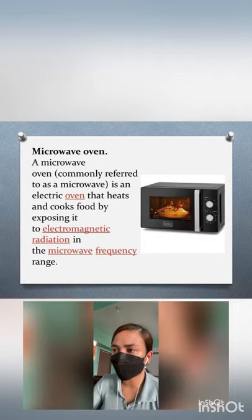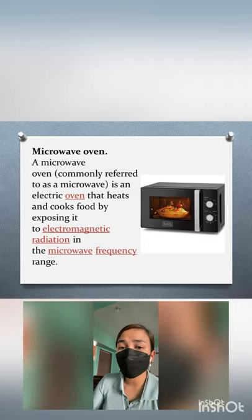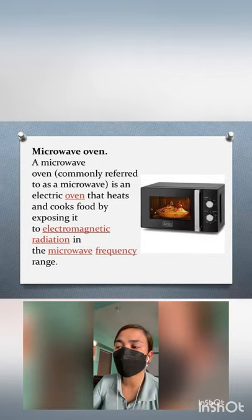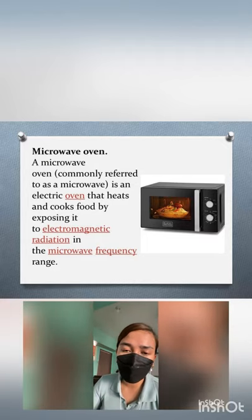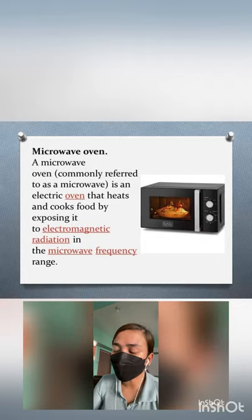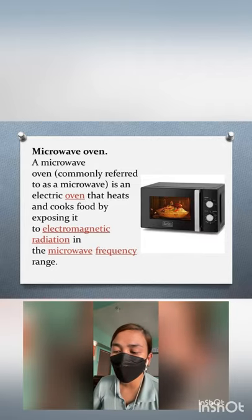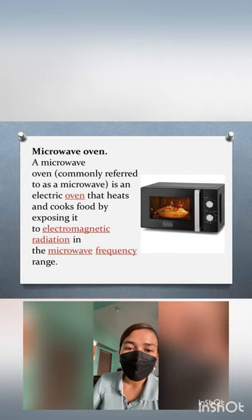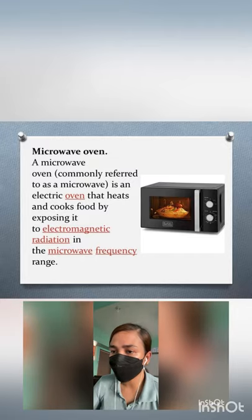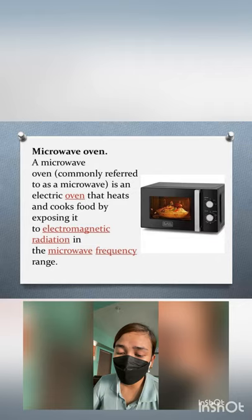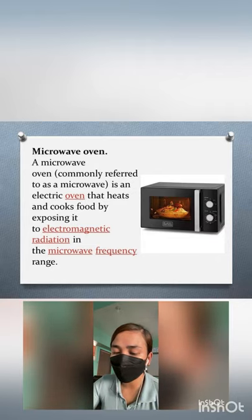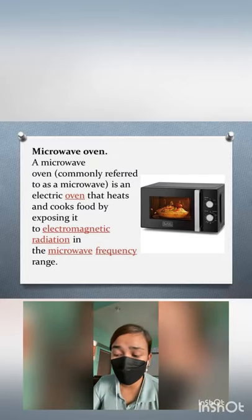Next, we have the microwave oven. A microwave oven is an electric oven that heats and cooks food by exposing it to electromagnetic radiation in the microwave frequency range. It is a very versatile kitchen appliance that can be used to reheat and cook food, and even disinfect kitchen items. However, metals are not allowed in a microwave oven because it can cause currents to flow in metals, and thin pieces of metal may heat up enough to cause fire.